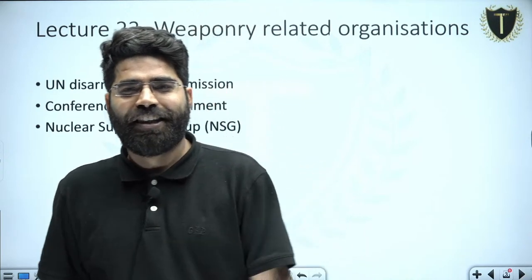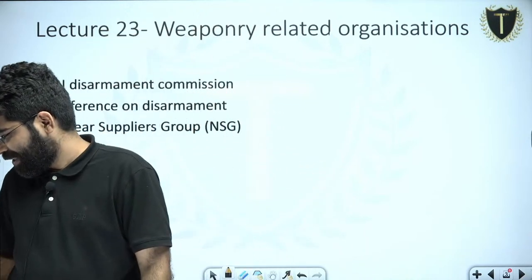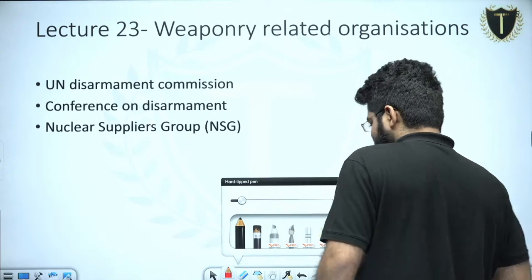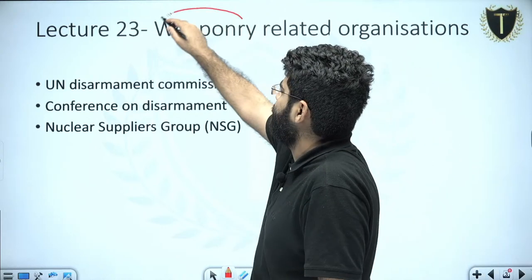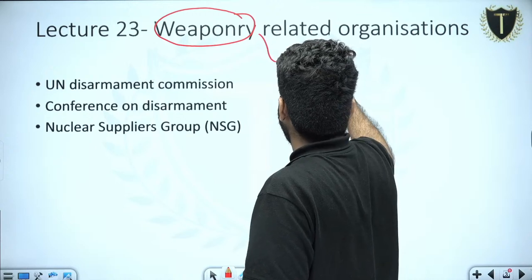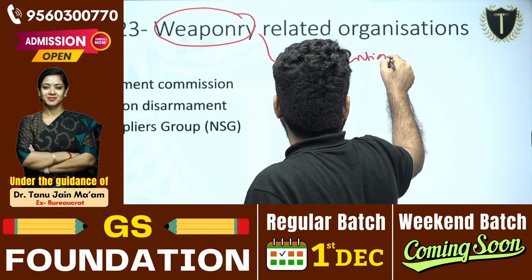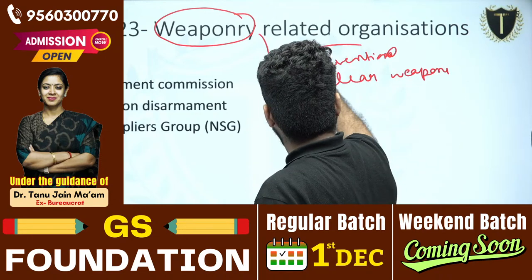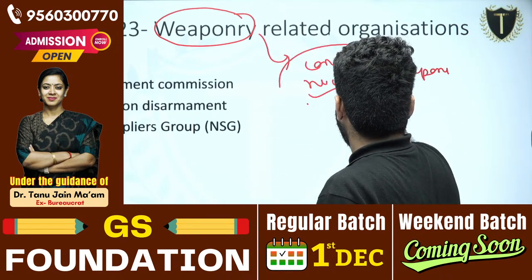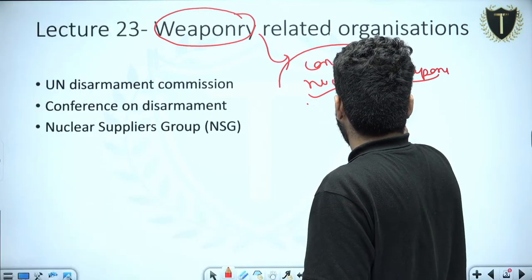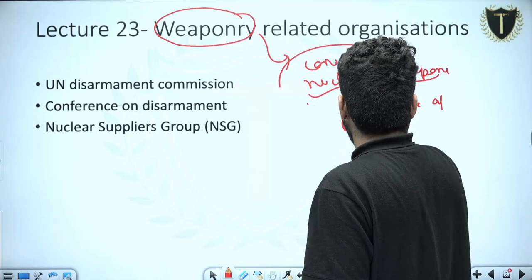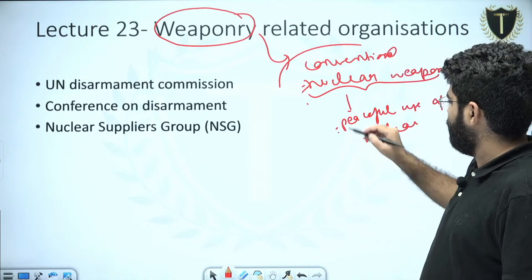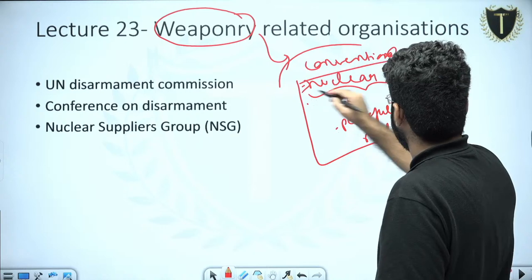Good afternoon everyone. Here we are with a new lecture of our series International Groups and Organizations. In this lecture we are going to discuss something related to weaponry — it can be related to conventional weapons, nuclear weapons, or the peaceful uses of nuclear energy. The combined use is known as dual use.